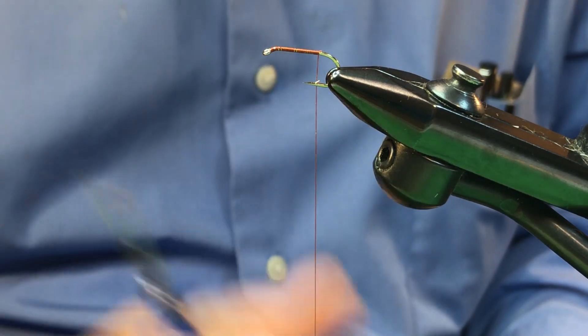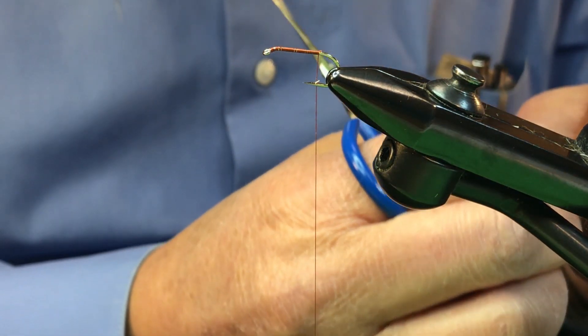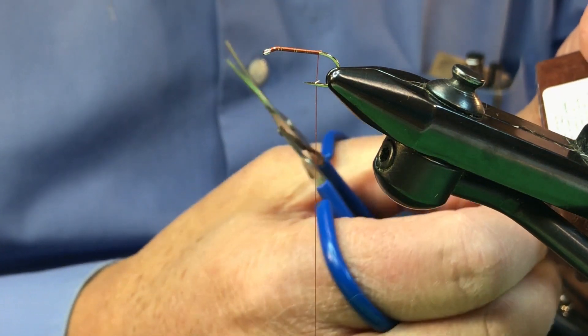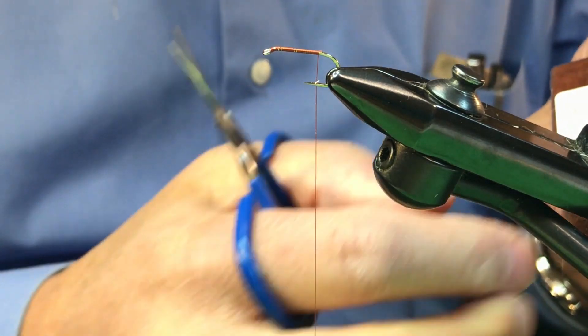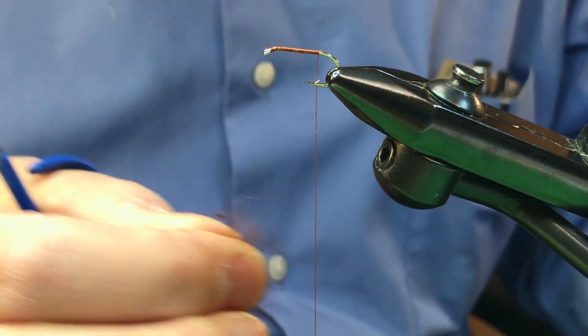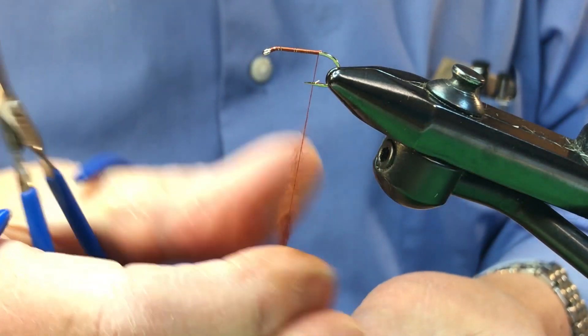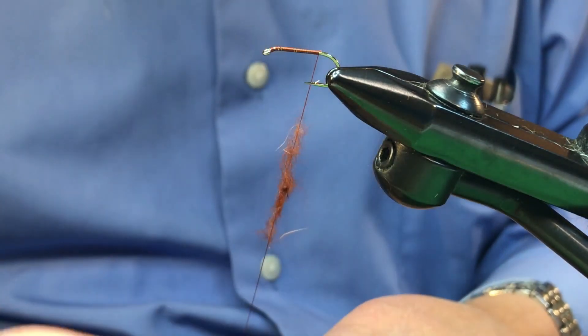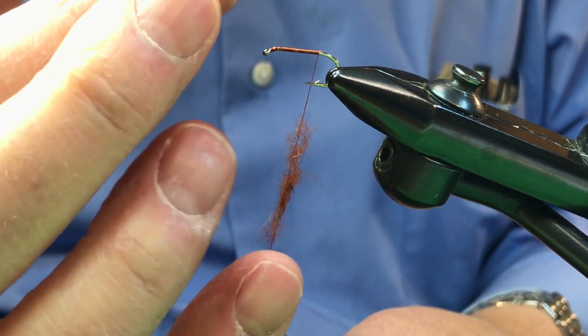So let's get some dubbing and we'll just pull enough off for a demo and apply it to the thread. We're not going to try to make a fly here, but lay it on the thread like this. Now normally you'll watch and people will be doing this.